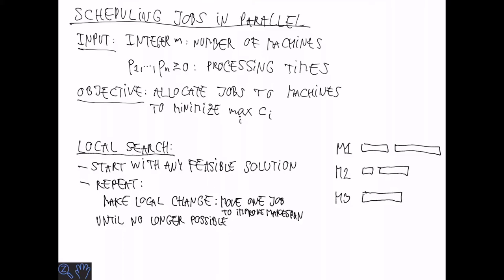the first job from machine 1, to the last machine, which will reduce the makespan. The local search does these kind of changes until it terminates.